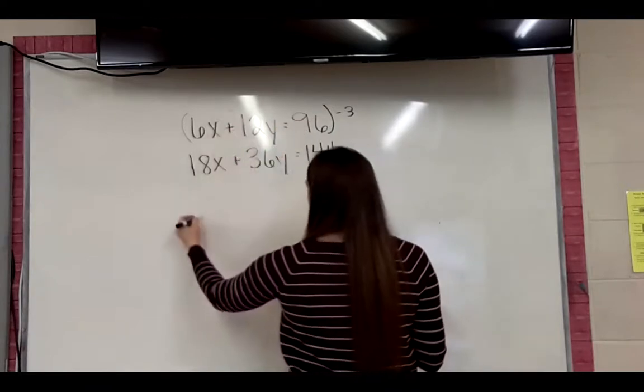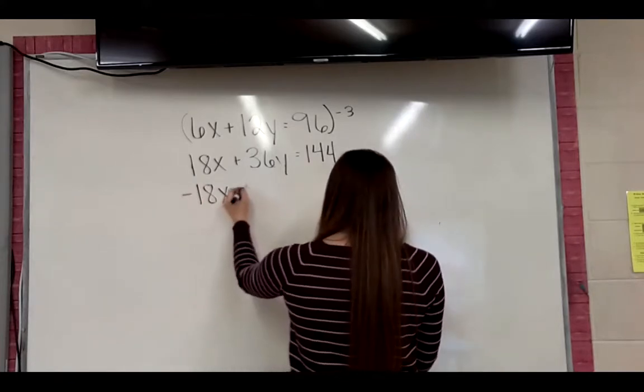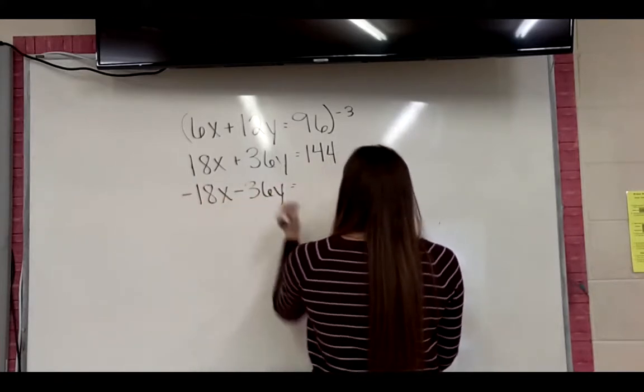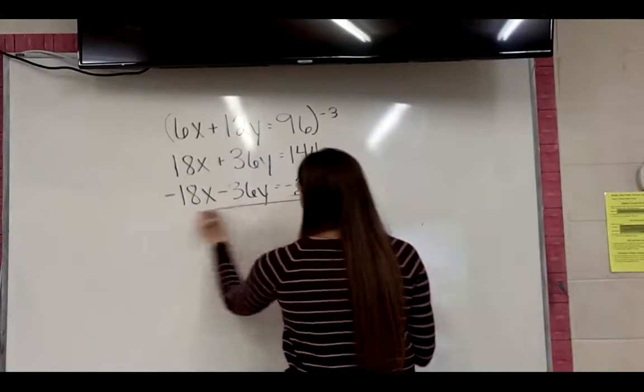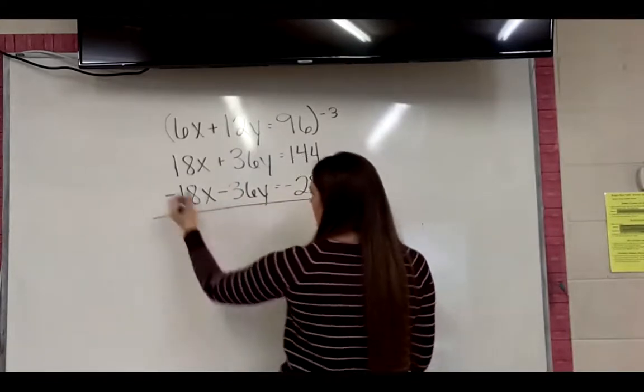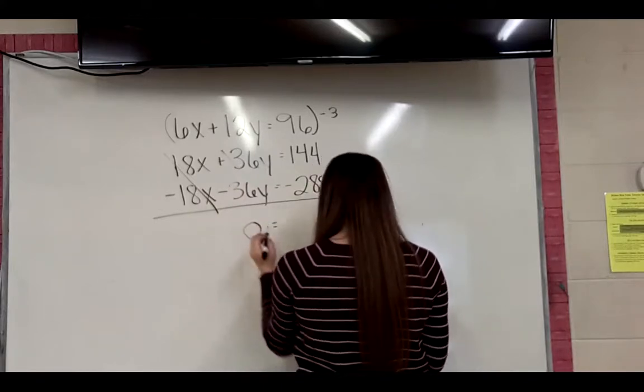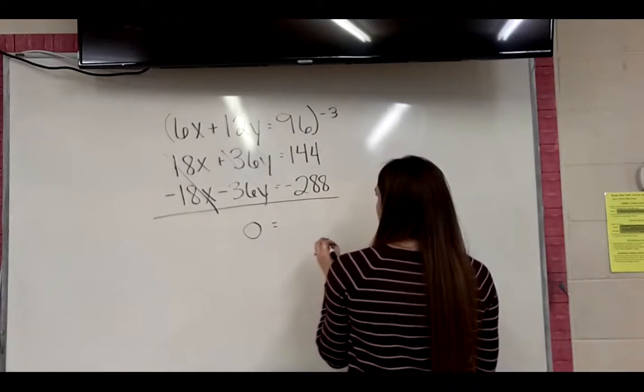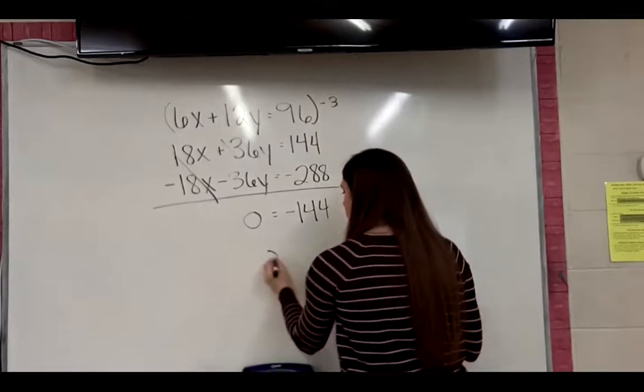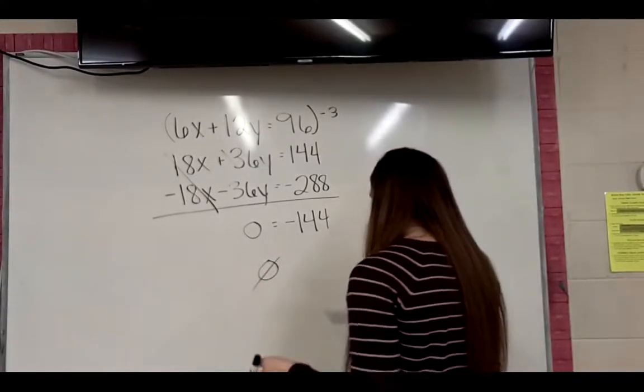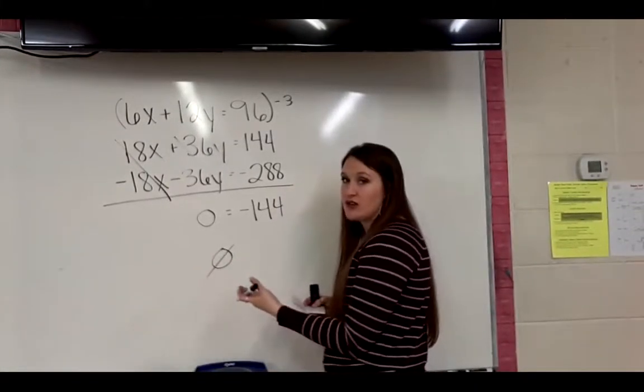So 6x times negative 3, I have negative 18x. 12y times negative 3 is negative 36y. And then 96 times negative 3 is negative 288. I typically would have wrote these the other way, but it doesn't matter. 18x minus 18x cancels. 36y minus 36y cancels. And we get 144 minus 288 is negative 144. And that won't be true. So it's no solution. So it said, what happens to the solution? Well, there isn't one. It completely changed, and now there isn't a solution.